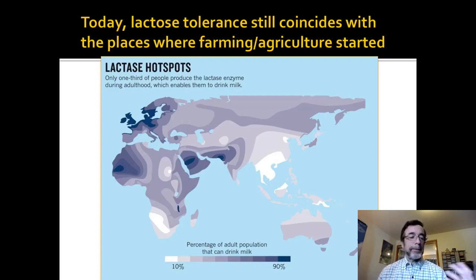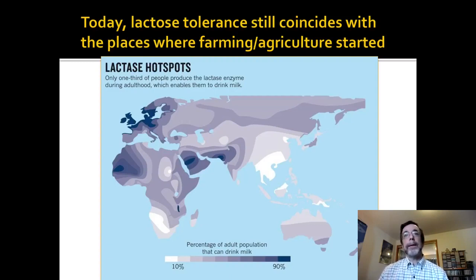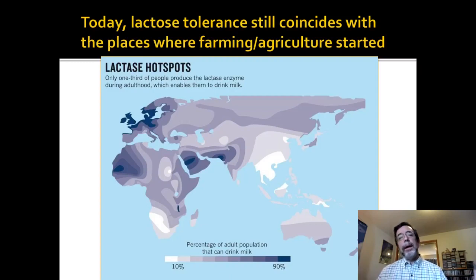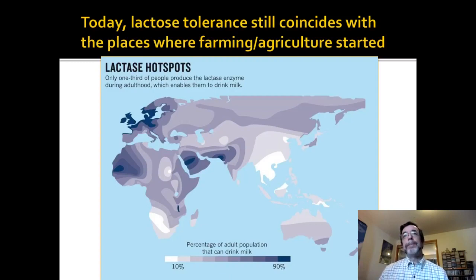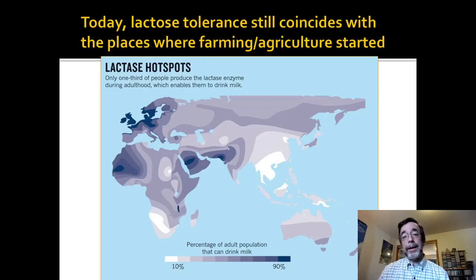Of course, we don't have to depend on evolution — we can do biochemistry and get rid of the lactose from milk so that someone who's lactose intolerant can still drink it. But if you're a lactose intolerant person, just know that it's not your fault. It's just your body trying to be efficient and survive on older food patterns than we have to follow today.